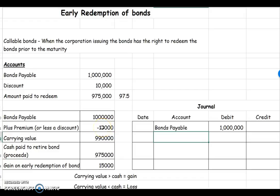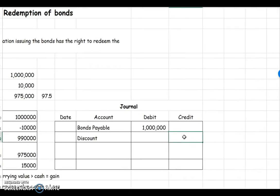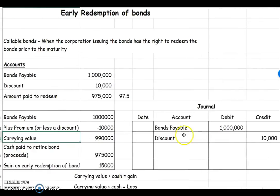So therefore, to get rid of the debit balance, we're going to credit our discount in the amount of $10,000. The cash that we had to pay out was $975,000.